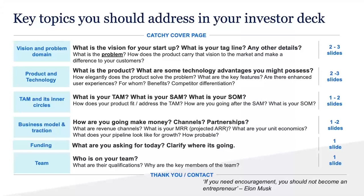Number four is your business model — you have to tell a story about how you're going to make money. What are your different revenue channels? What might be your projected monthly or annual recurring revenue? How will you form partnerships? Is there a revenue share arrangement? What does your pipeline look like from a client perspective if you're a B2B startup? What is the probability of achieving sales, letters of intent, or contracts through that pipeline? If you already have an existing product or SaaS business, what are your unit economics? Be extremely thorough with those numbers — you need to know your business inside and out.